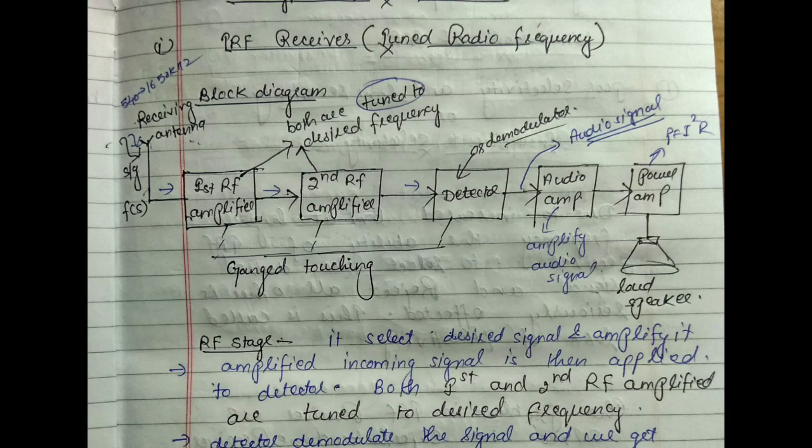Hello friends. Our today's lecture is TRF receiver. There are basically two types of receivers we study in our engineering levels: TRF receiver — tuned radio frequency receiver — and the other is superheterodyne receiver. These are the two main configurations of the receiver. So here we are going to study the TRF receiver, tuned radio frequency receiver.